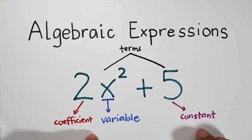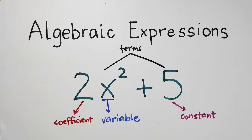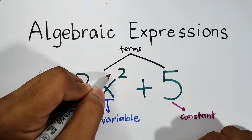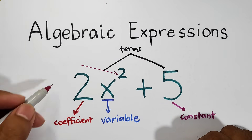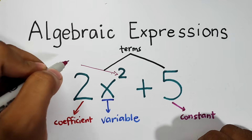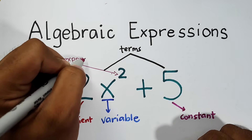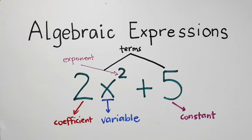You may be confused about the coefficient and the constant. The key difference is that the coefficient is part of a term with a variable, whereas the constant can stand alone without a variable. Aside from that, we have what is called the exponent — this number at the upper right of the variable. So these are the different parts of any given algebraic expression.